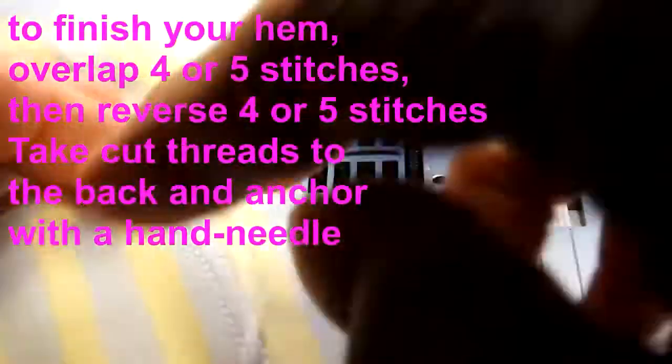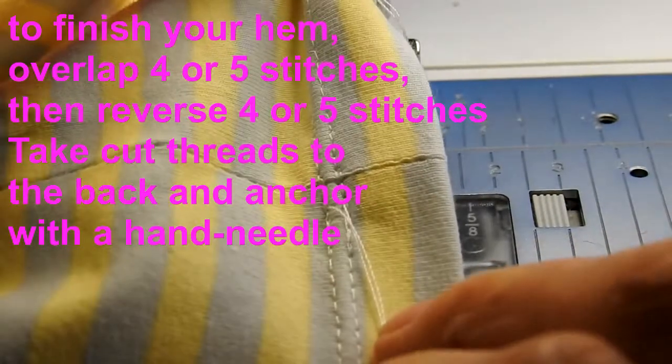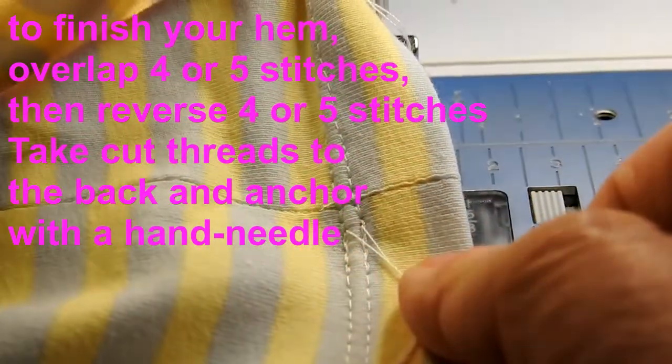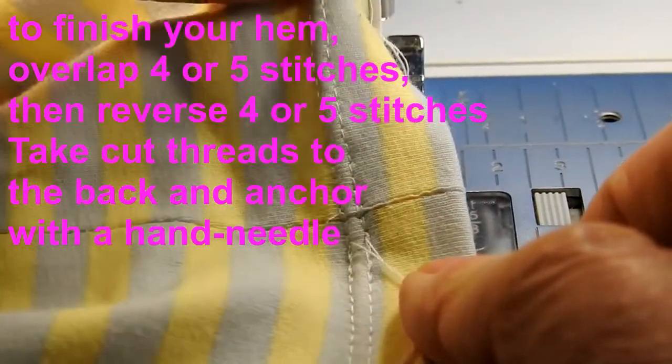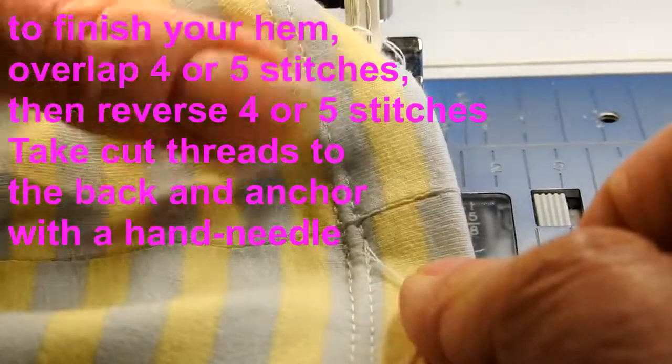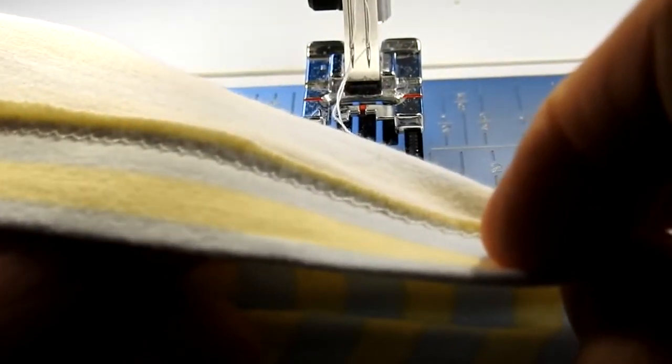So there's our intersection. I'll take my top threads to the bottom and then fasten them off with a needle. And there's what our bottom or the underside looks like—it looks like a small zigzag stitch. All is well, we're done.